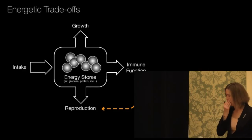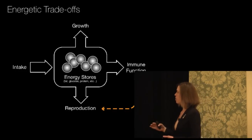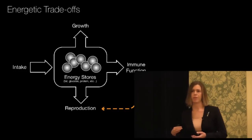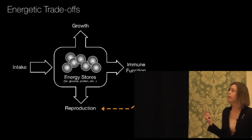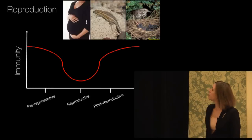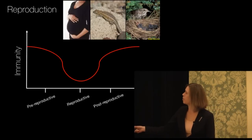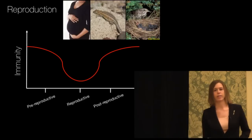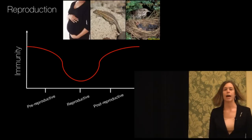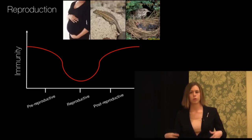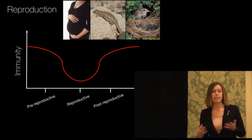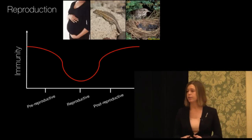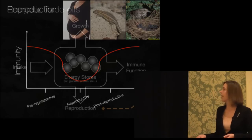We do know a lot about how the immune system and the reproductive system interact, and it does seem that they do compete for resources. We see this across different species. In general, if we look across animals, we see that immunity generally decreases during the most costly reproductive stages. We see this in birds, reptiles, and even us as humans during pregnancy. And we're not really sure why this occurs — it's thought maybe it's adaptive to prevent miscarriage of the fetus during pregnancy, but again we're still trying to figure that out.